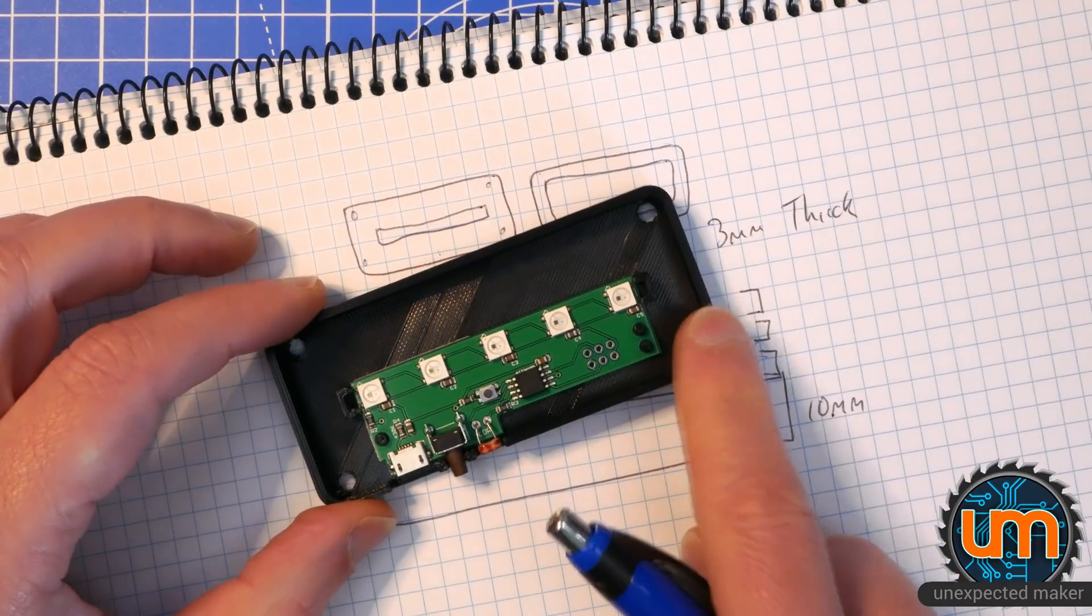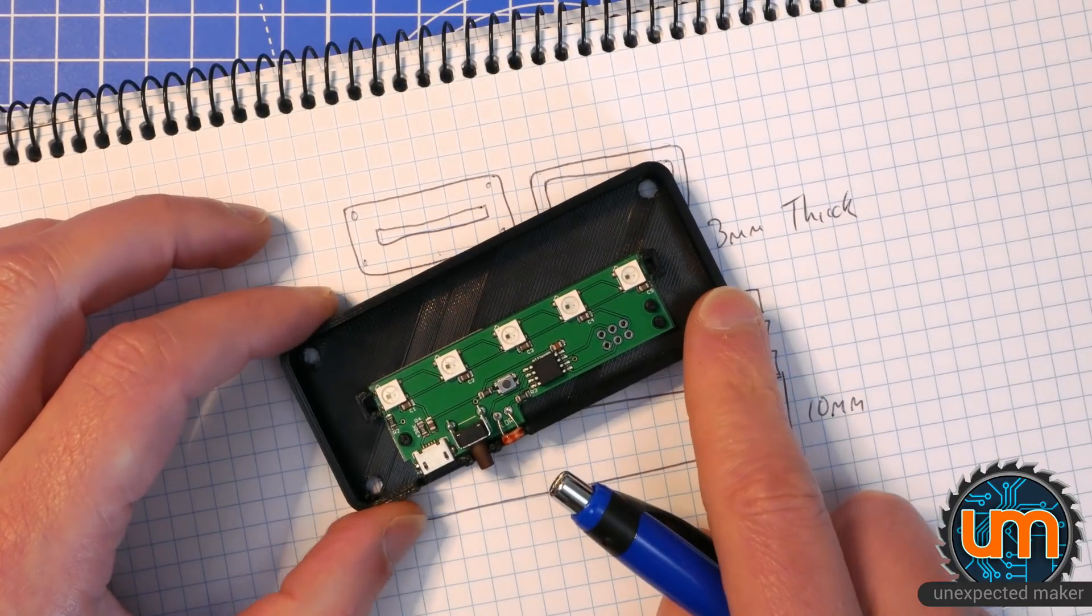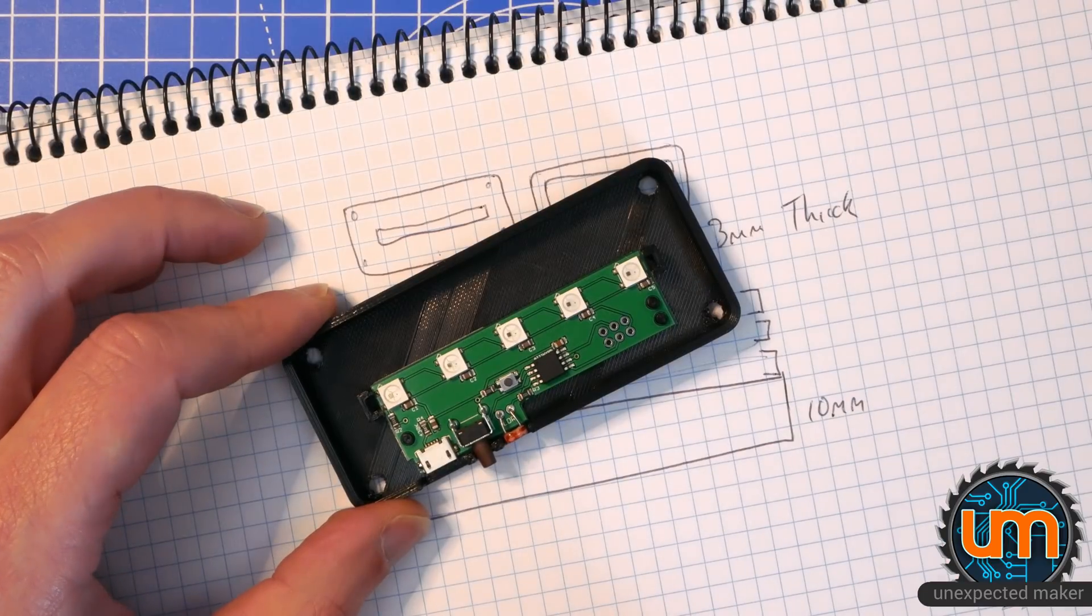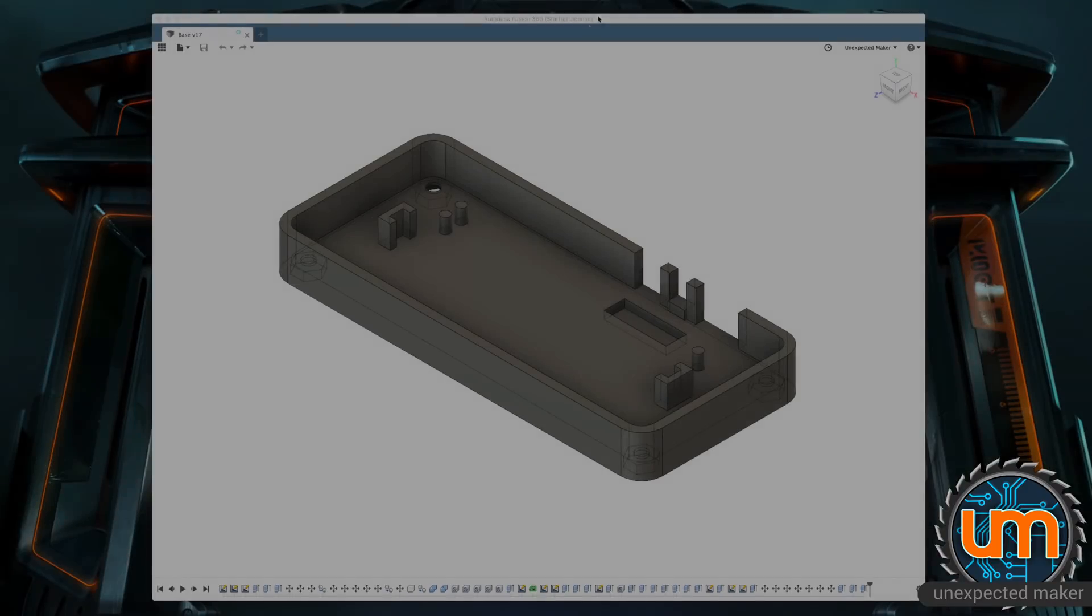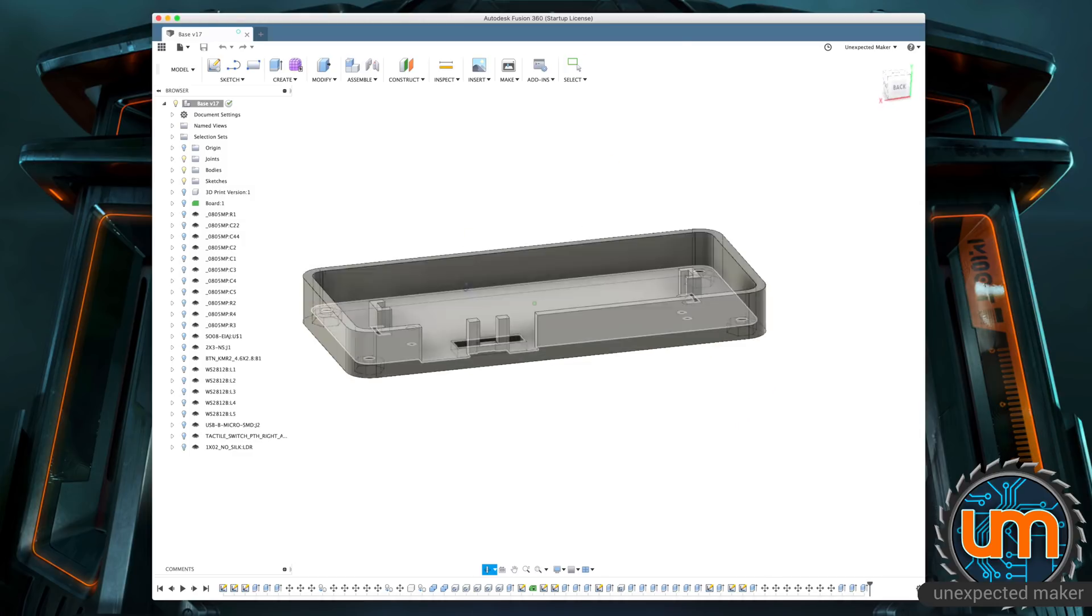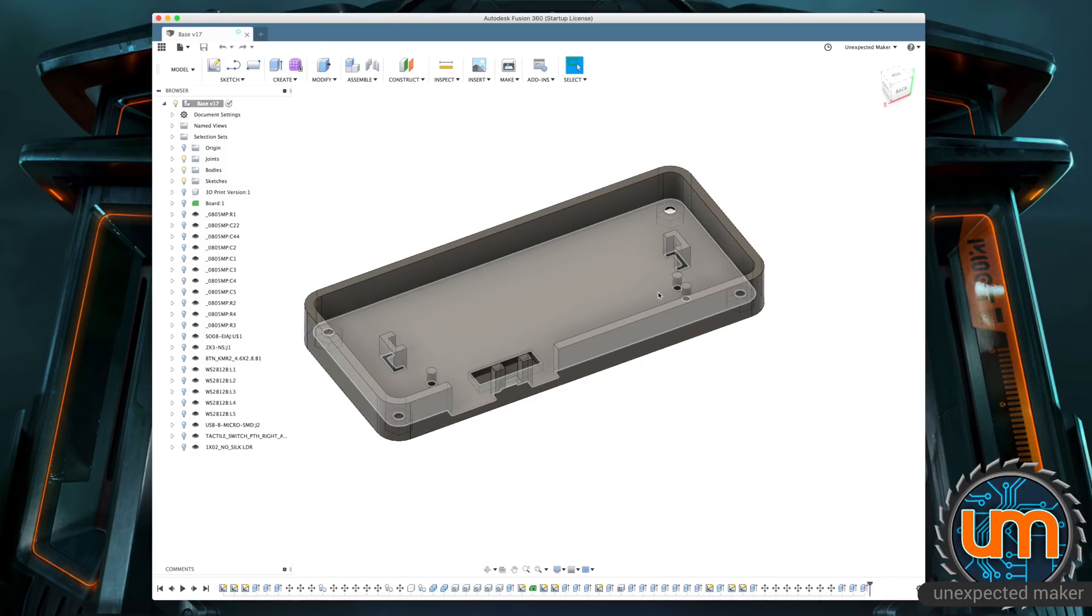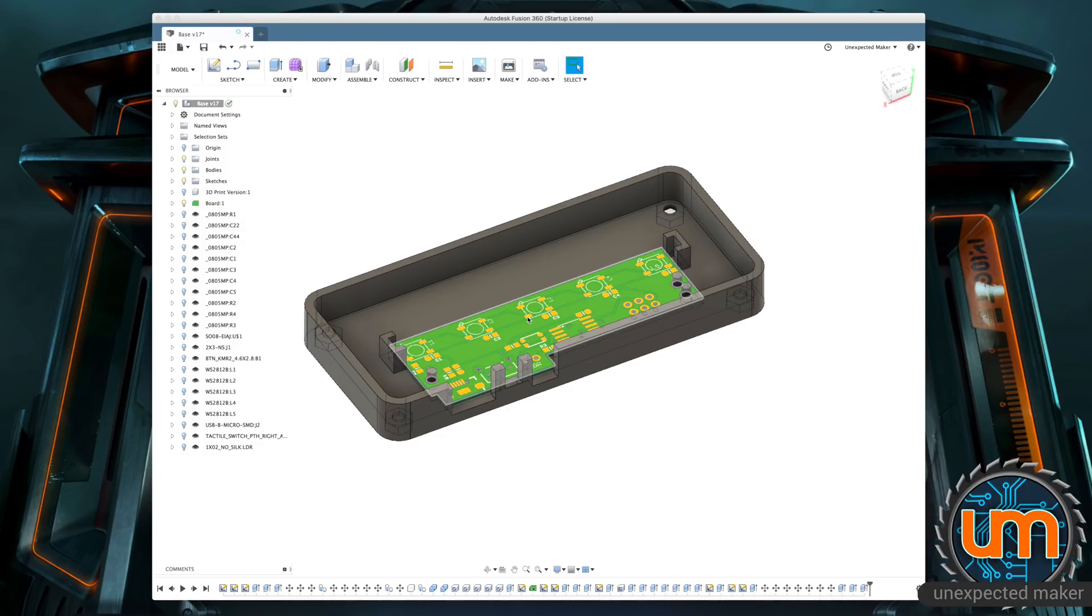So I'm going to do all this in Fusion 360, and I'm also going to give you a look at the base construction in Fusion 360. There are a couple of little changes I want to make to the base as well. Let's jump into Fusion 360. Here we are. And here's the base as an object, a 3D object.